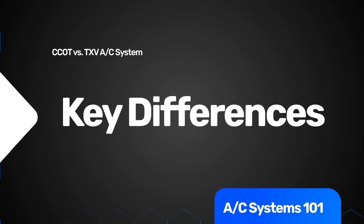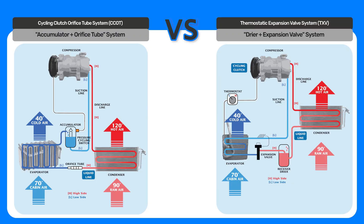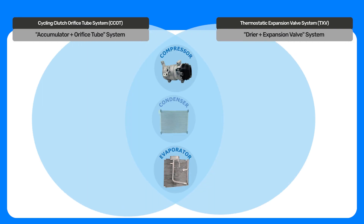There are some key differences between the orifice tube and the expansion valve system. The orifice tube is a fixed orifice, so you can't change the inside diameter of the tube — you're always getting the same volume. On an expansion valve, you can actually change the volume based on the needs of the system.